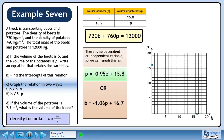Plot the b-intercept at 16.7. We have two points, so we can draw the line. It's appropriate to use a line for this graph since we can have decimal values for volume.